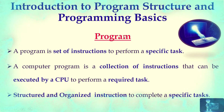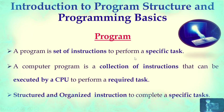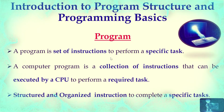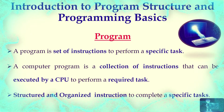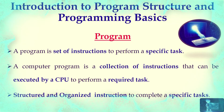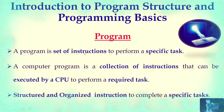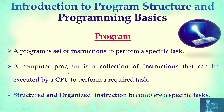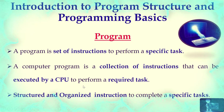Let's start with the program. What is a program? A program is a set of instructions to perform a specific task. What is an instruction? It's a step-by-step process. The actual work of a computer is that it converts data into information based on instructions. A computer program is a collection of instructions that can be executed by a CPU to perform a required task.